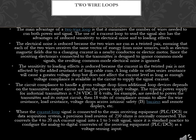The sensitivity to loading effects is reduced because the current in the twisted pair is not affected by the added resistance of long cable runs. A long cable or other series resistance will cause a greater voltage drop but does not affect the current level as long as enough voltage compliance is available in the circuit. The circuit compliance to handle a given voltage drop from additional loop devices depends on the transmitter output circuit and on the power supply voltage. The typical power supply for industrial transmitters is +24VDC. If 6V are needed to power the transmitter and its output circuit, then 18V of compliance remain to allow for wire resistance, load resistance, voltage drops across intrinsic safety (IS) barriers and remote displays, etc. Where the current loop signal is connected to the main receiving equipment (PLC/DCS or data acquisition system), a precision load resistor of 250 ohms is normally connected.